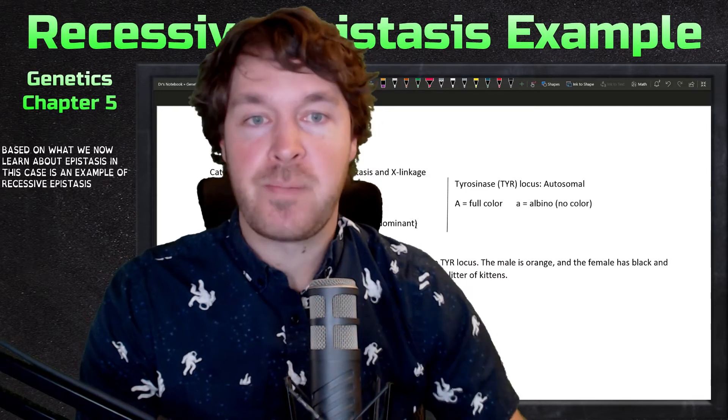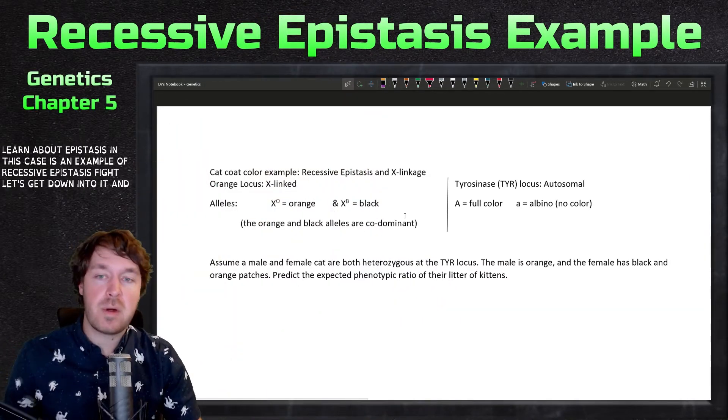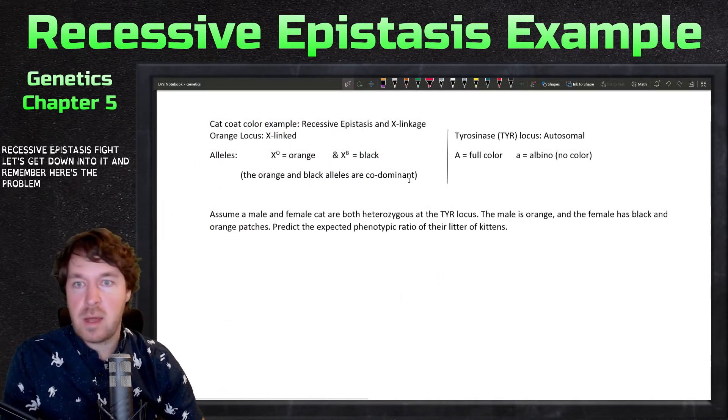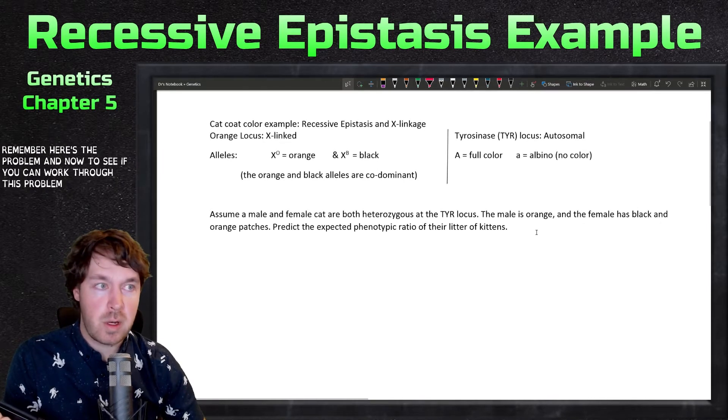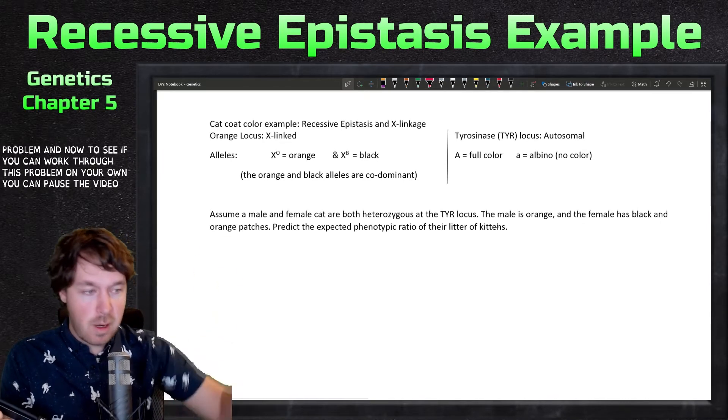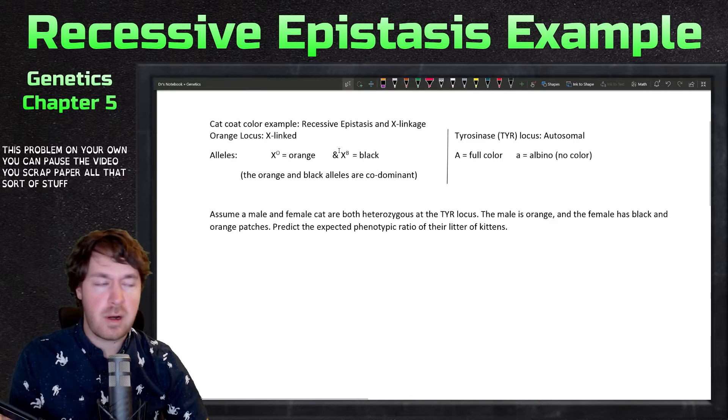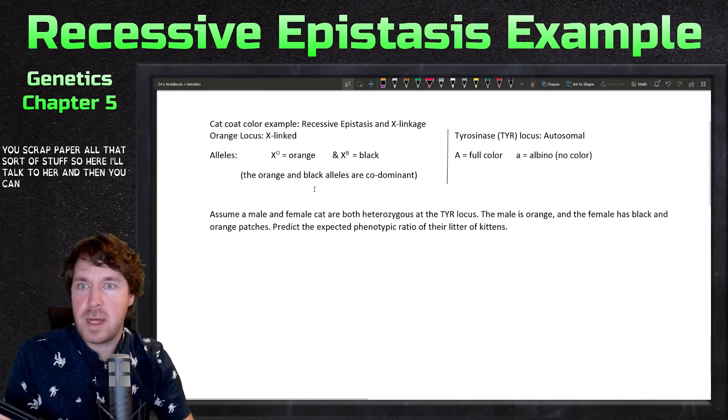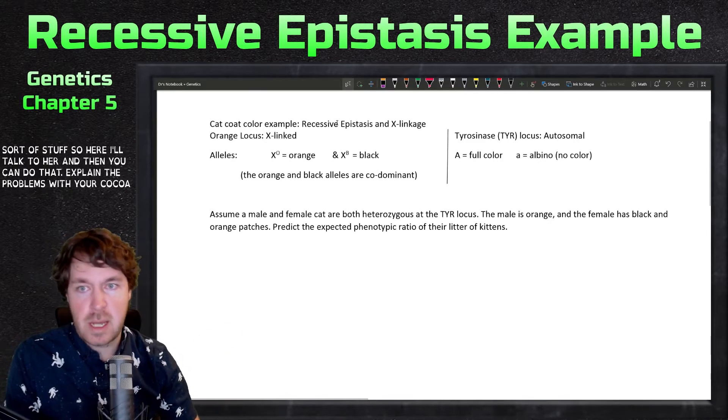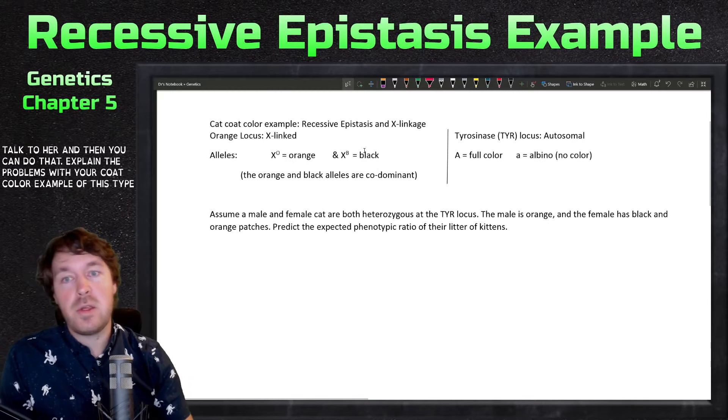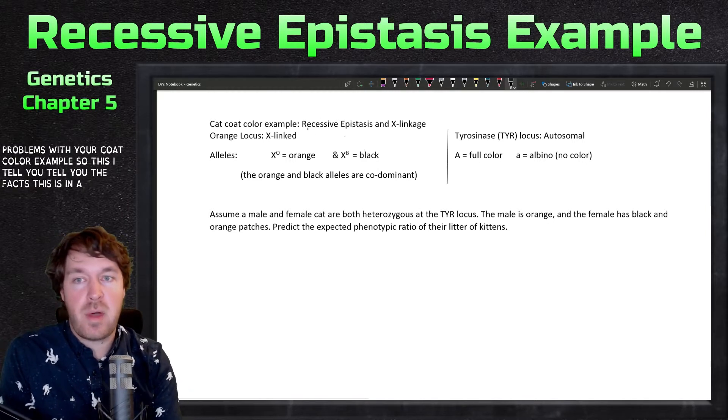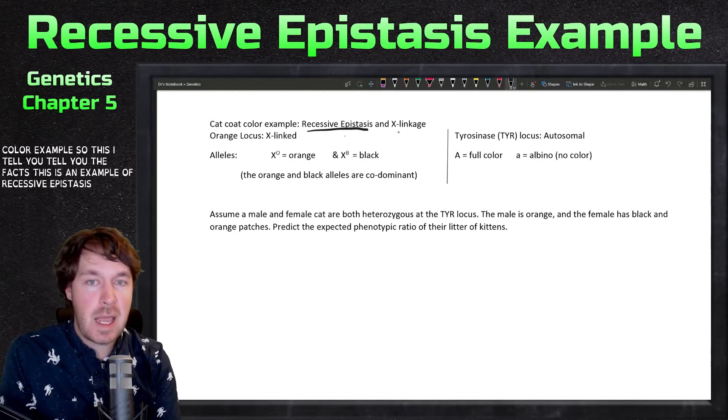This is an example of recessive epistasis. Let's get down into it. Here's the problem - now see if you can work through this problem on your own. You can pause the video, use scrap paper, all that sort of stuff. I'll talk through it and then you can do that. Here, coat color example - this is an example of recessive epistasis and X-linkage.